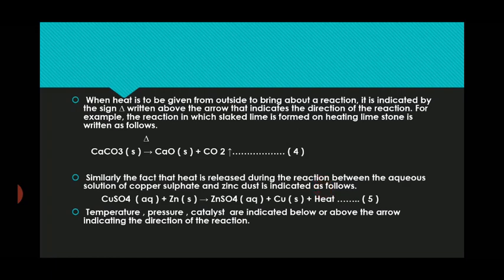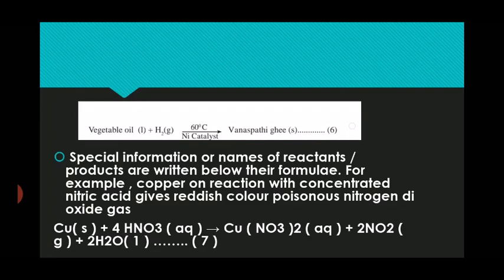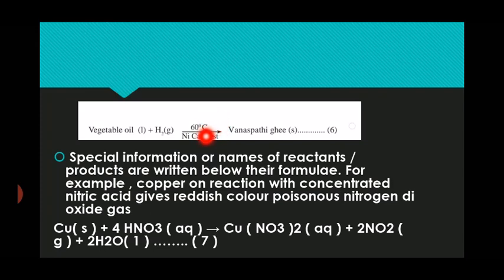Now come to the fifth point. For a reaction, it is necessary to indicate certain conditions such as temperature, pressure, and catalyst. These are indicated below or above the arrow showing the direction of the reaction. For example, vegetable oil in liquid form reacts with hydrogen gas. Above the arrow we write 60 degrees centigrade and nickel as the catalyst. The product we get is vanaspati ghee in solid form.